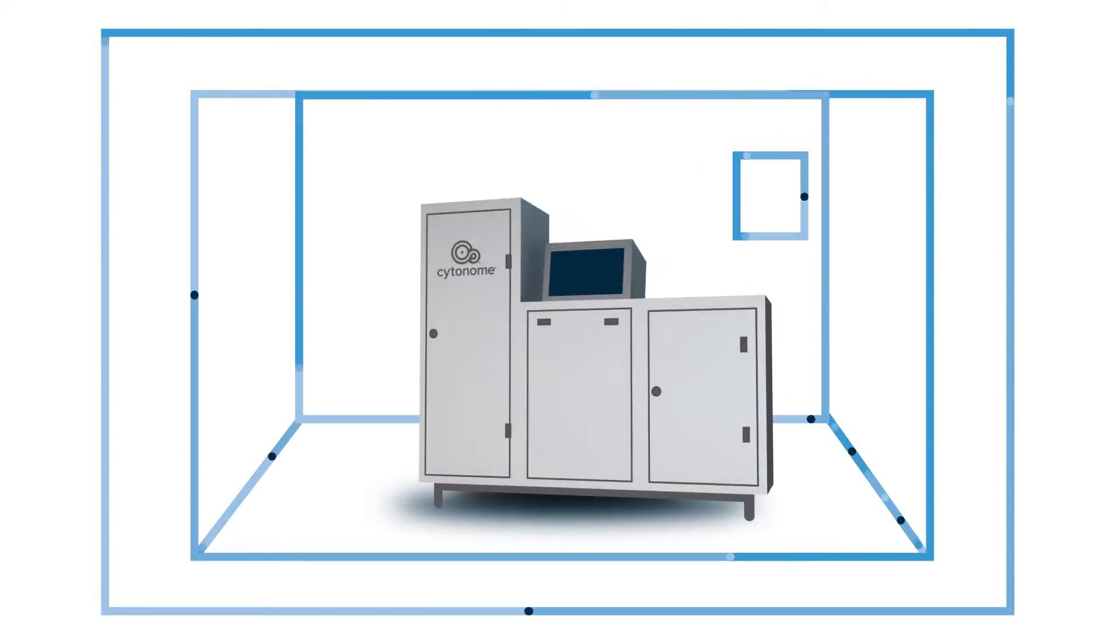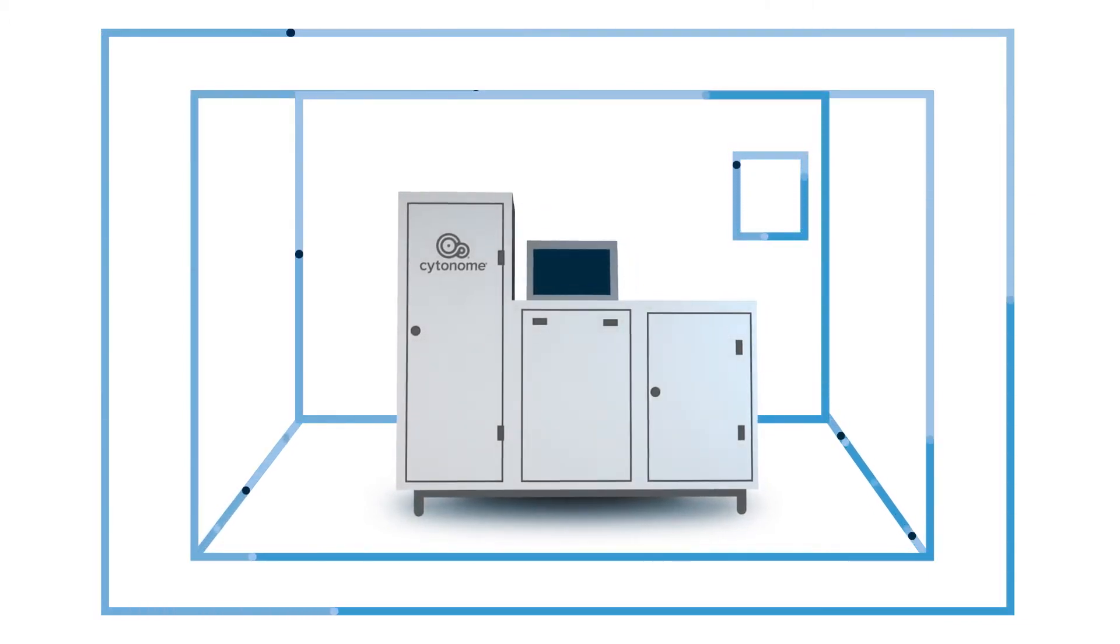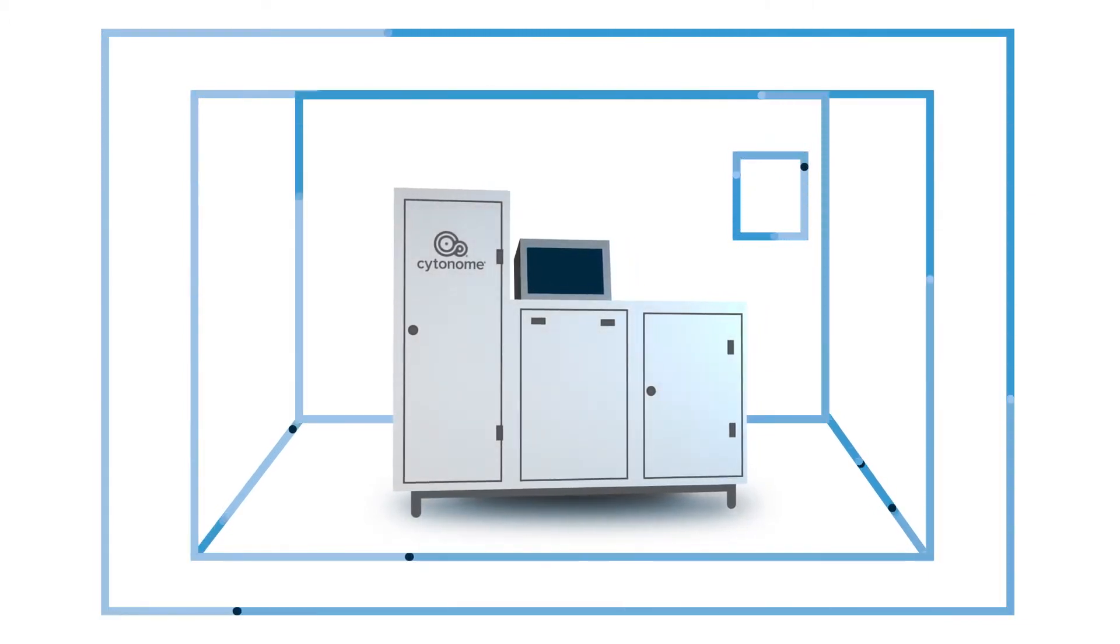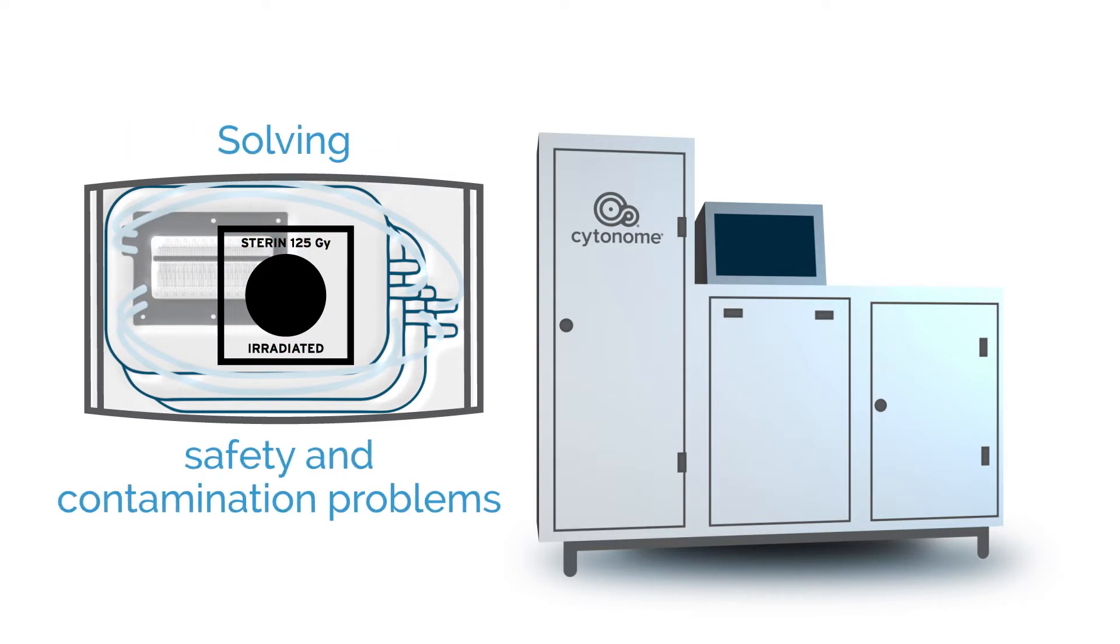The Cytonome GIGASORT is a high-throughput enclosed microfluidic cell sorting platform created for cell bioprocessing. The fully enclosed single-use fluidic set is gamma irradiated for sterility, solving safety and contamination problems that plague droplet sorting technologies.